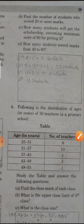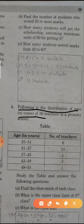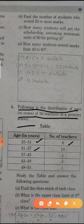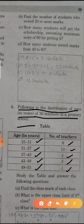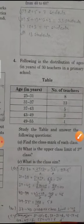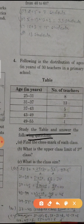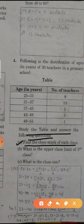Now question 4: following is the distribution of ages in years of 30 teachers in a primary school. 25 to 31 years: 8 teachers, 31 to 37: 13 teachers, 37 to 43: 5 teachers, 43 to 49: 3 teachers, 49 to 55: 1 teacher. Study the table and answer the following questions. First is, find the class marks of each class. To find the class mark, we add the upper limit and lower limit. Lower limit is less value and upper limit is highest value. The sum of both values divided by 2.